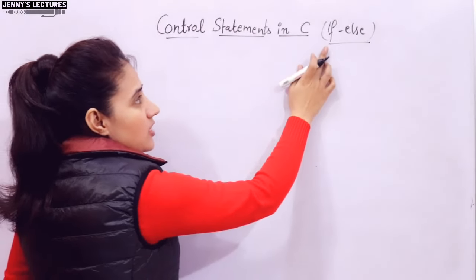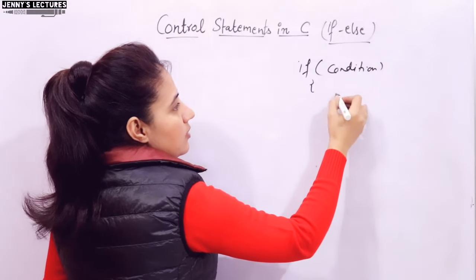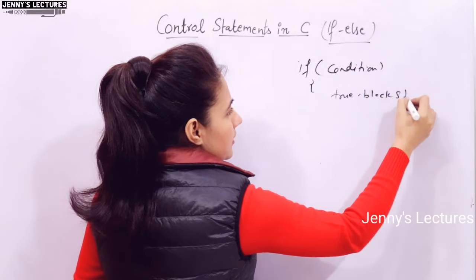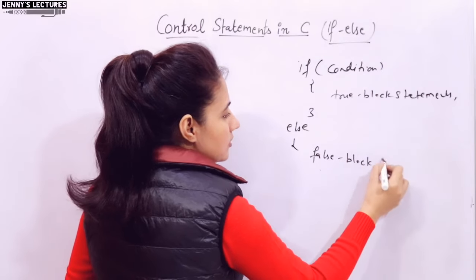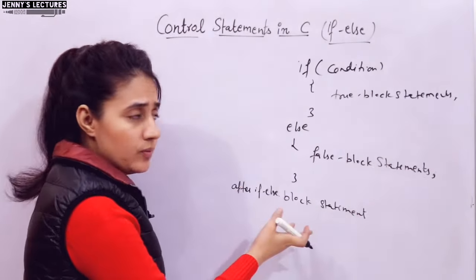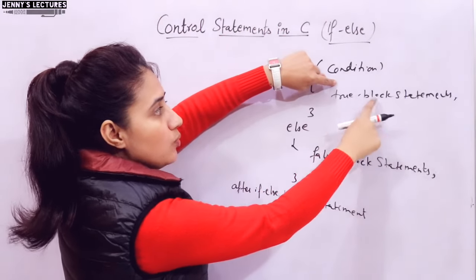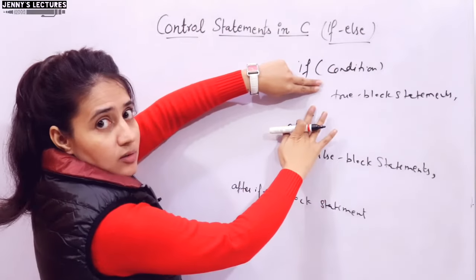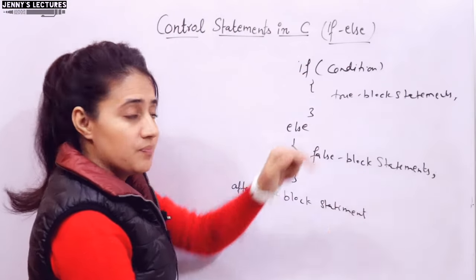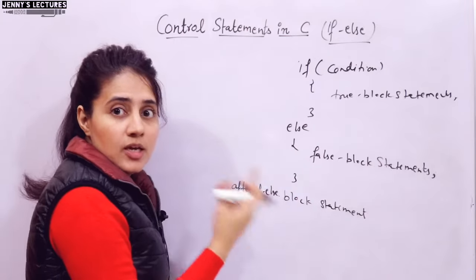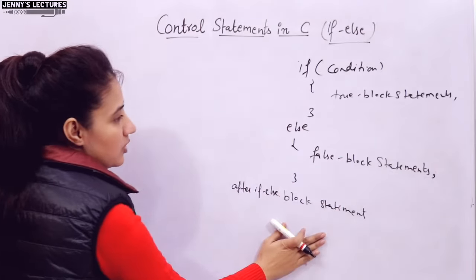The general syntax of if-else: write 'if', then the condition or test expression, followed by the true block statements in curly braces. Then write 'else' followed by the false block statements. After the if-else block, you can write additional statements that are not part of it. Curly braces are needed only when there are multiple statements; a single statement doesn't require them.